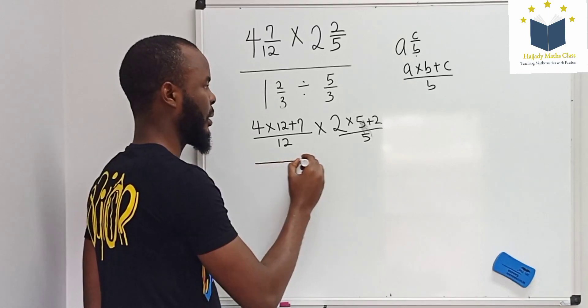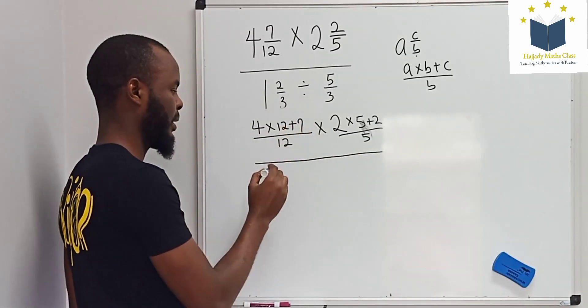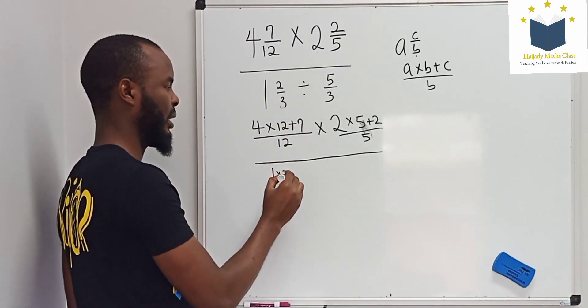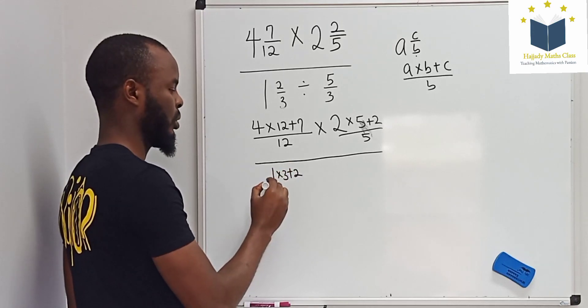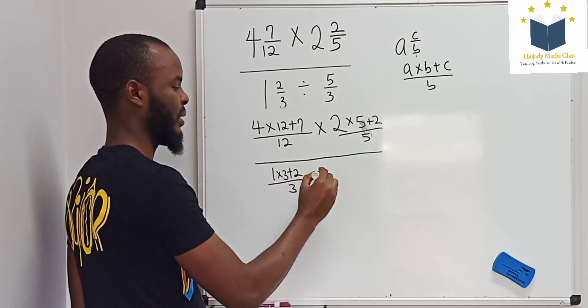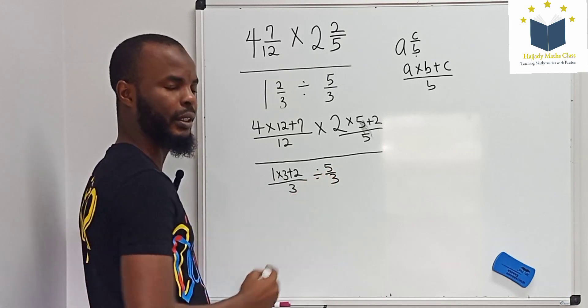So everything divided by 1 multiplied by 3 plus 2 over 3, divided by 5 over 3.